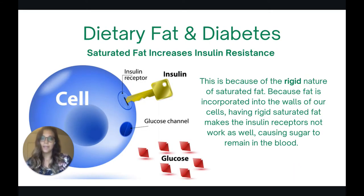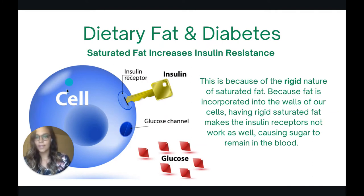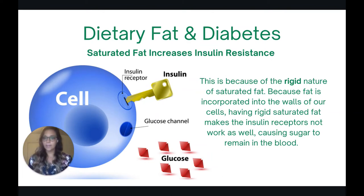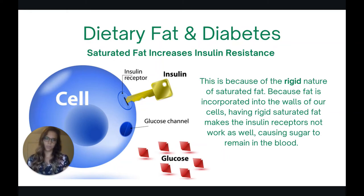Now let's talk about dietary fat and diabetes. The key here is that saturated fat increases insulin resistance, again because of its rigid nature. Think of it this way: insulin acts as a key to open a door on a receptor that allows glucose to come into the cell and out of the blood. When we eat saturated fat and it gets incorporated into the cell membrane, it makes the receptor stiff and rigid, so insulin can't work as well to bring the glucose in — and this leaves glucose in the blood, making your blood sugar remain high.